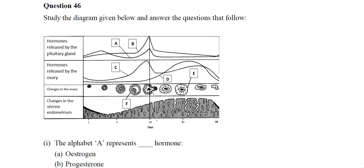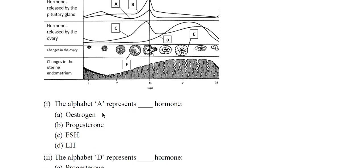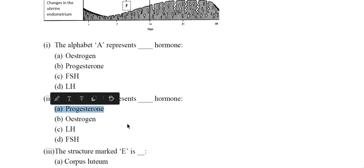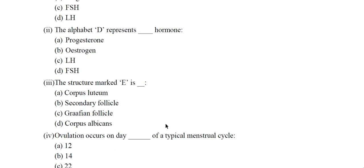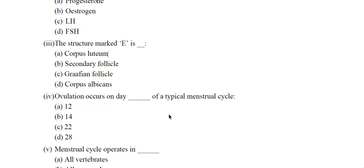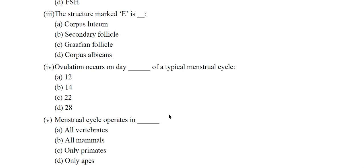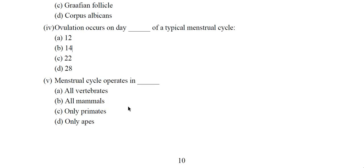Question 46: A diagram of the menstrual cycle is given showing hormonal changes in the ovary and uterine endometrium. Alphabet A represents FSH — option C is the correct answer. Alphabet D represents progesterone hormone, option A. Structure E is corpus luteum. Ovulation occurs on day 14, option B. Menstrual cycle operates only in primates, option C.